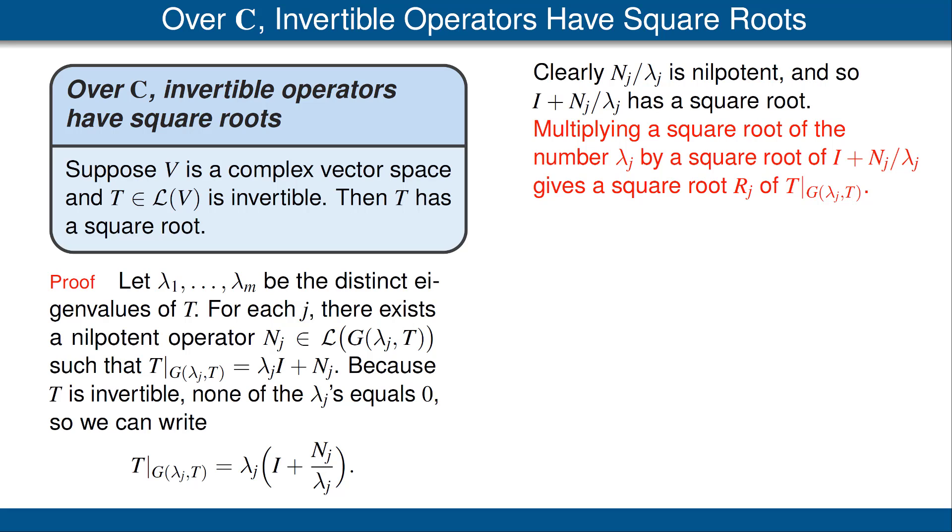Also, the complex number λⱼ has a complex square root, because every complex number has a square root. This is where we're using the hypothesis that our scalar field is the complexes. So, multiply the square root of I plus Nⱼ divided by λⱼ times the square root of λⱼ. That gives us some operator Rⱼ. That, by the last line in the first column of this slide, is the square root of T restricted to the generalized eigenspace.